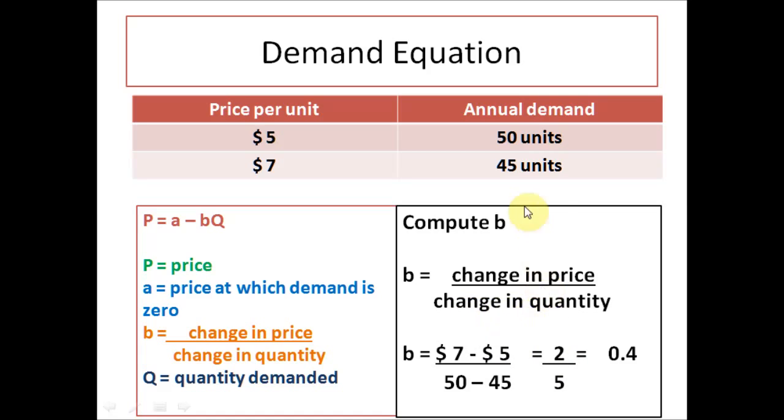Now we need to calculate the change in quantity. Because the demand fell, we would do 50 units minus 45 units which gives us 5. So B is 2 divided by 5, which is 0.4.